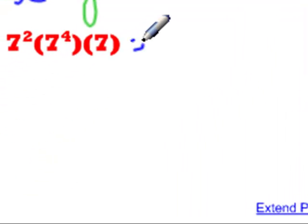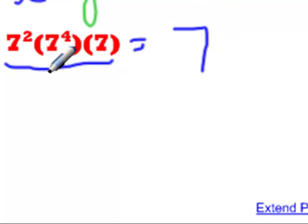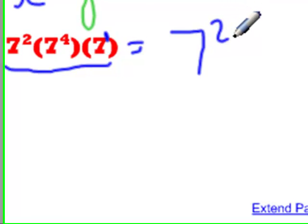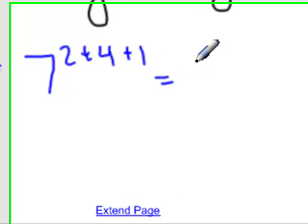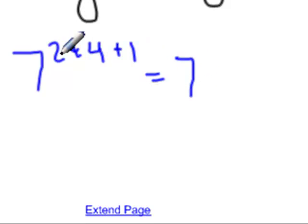The next example all has the same base, and there's only one of them, it's 7. So we'll write down that base. Now we have to add 2, 4, and remember the 1 that's there, so we can add all 3 of those at the same time. This will simplify into exponential form as 7 to the power of 2 plus 4 plus 1, which is 7.